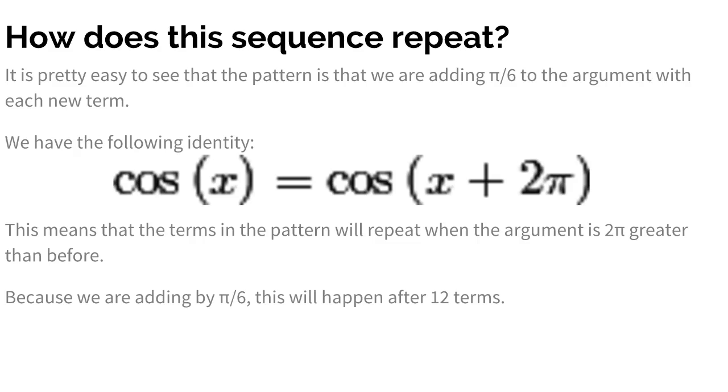So we want to figure out how this sequence repeats, because we have 2017 different terms in the sequence, and we can't figure out all of those 2017 terms. So to do this, we use the period of cosine. Cosine of x equals cosine of x plus 2π. That means the terms will repeat when we add 2π to each argument. Since we're adding by π/6 each time, this happens after we add 12π/6, since 12π/6 equals 2π. So we repeat every 12 terms.